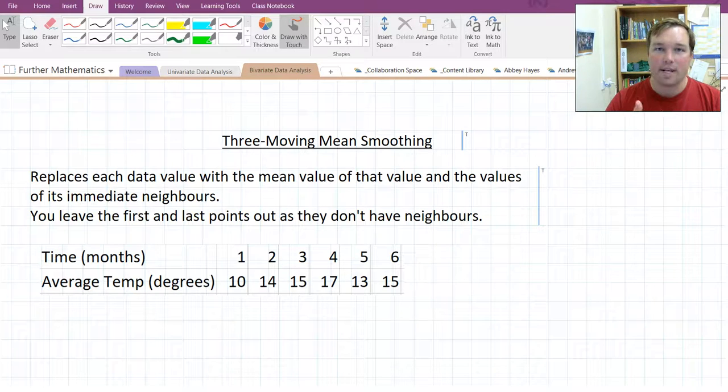And we do it using the mean. There are two methods of smoothing out fluctuations, one mean, one median. This video is on mean smoothing.